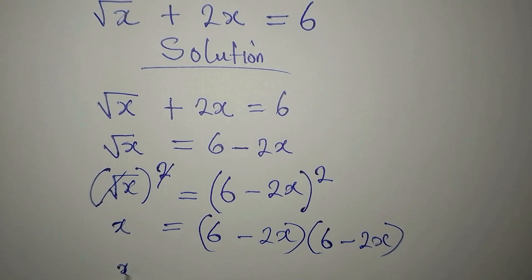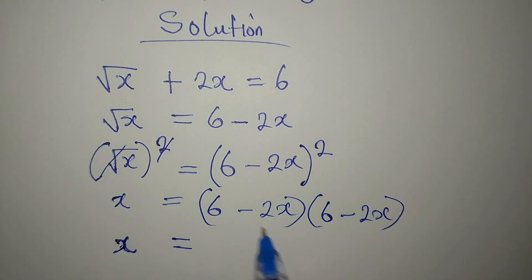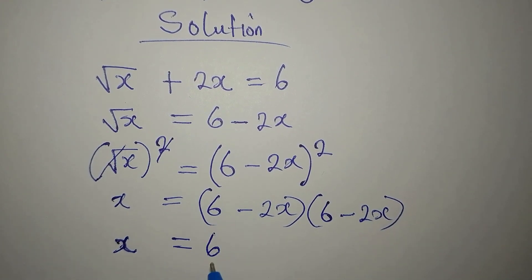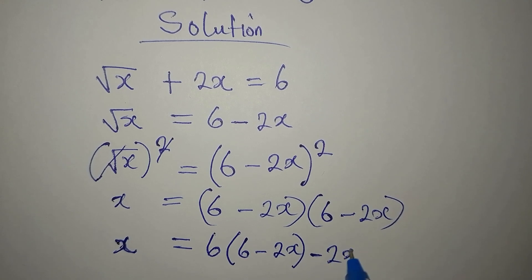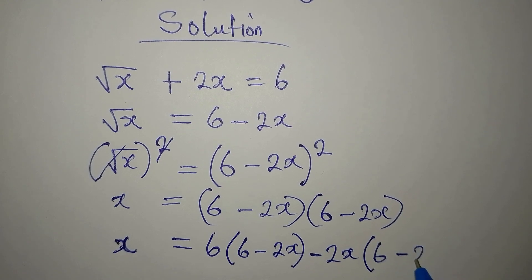So now let's multiply. x will be equal to 6 times 6. This here will multiply everything. You can rearrange it like this: 6 multiplied by everything here, 6 minus 2x. Then this is minus 2x. It will multiply everything here to 6 minus 2x.